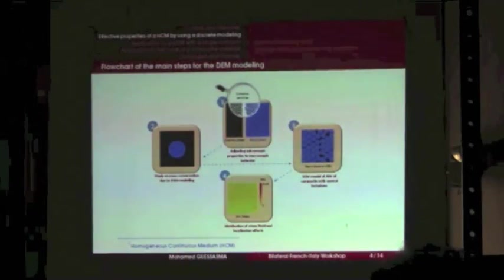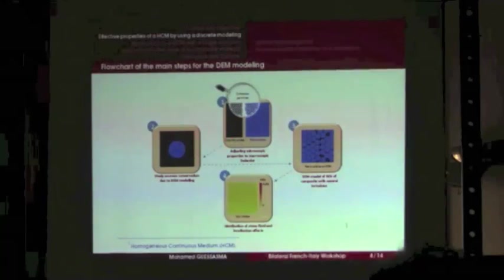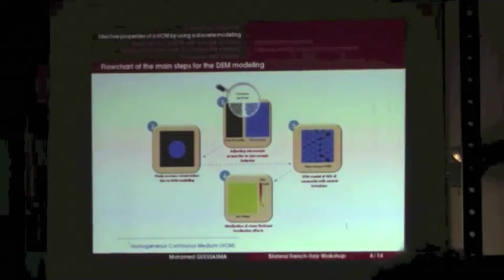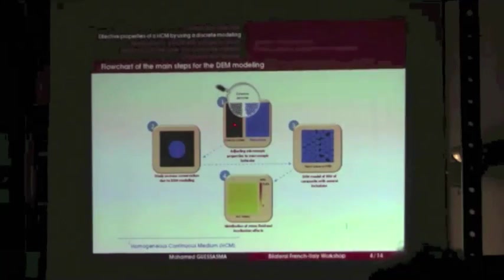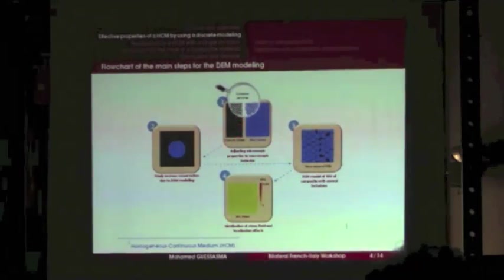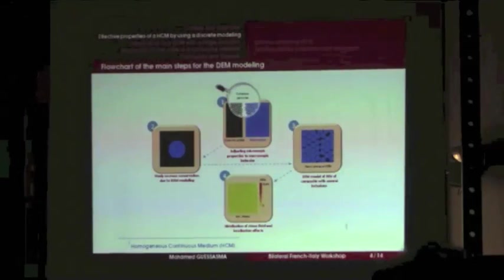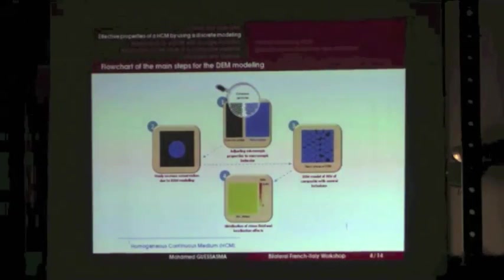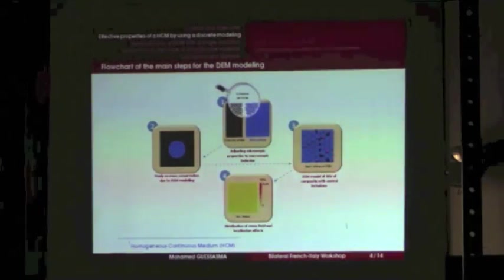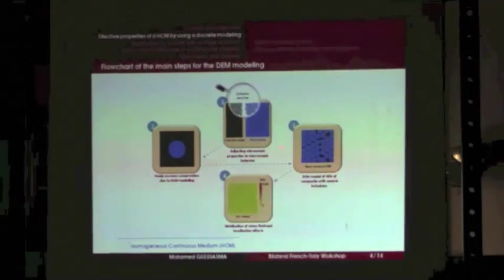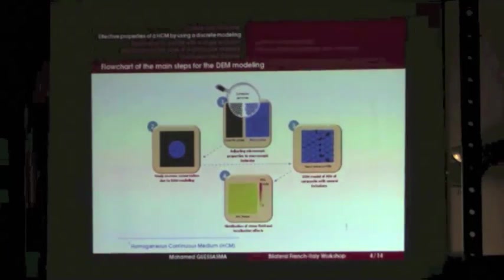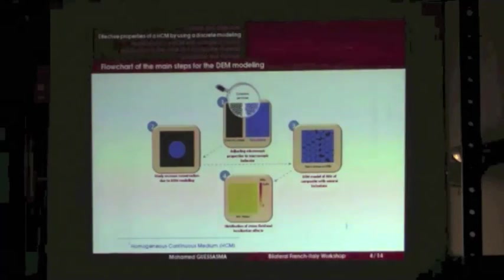The flow chart of the main steps for the discrete element modeling is the following. The first step consists of adjusting microscopic properties to macroscopic behavior by considering the discrete element as a cohesive domain for the ceramic phase and the resin phase. At the second step, we consider a single inclusion for mass conservation purposes. The third step is to apply this method to the composite material, and the last step is to study the distribution of the stress field and the localization effects.